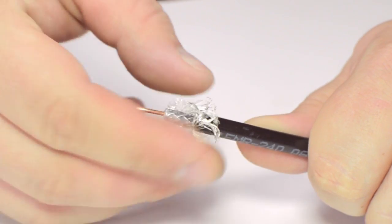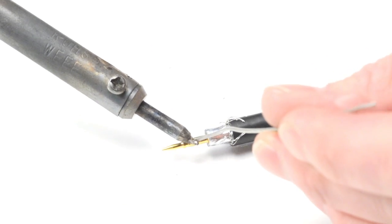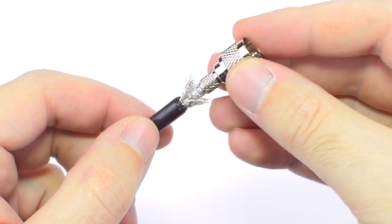Pull back the braided shield and insert the pin onto the center conductor. Solder the pin onto the center conductor and insert the connector housing over the cable.